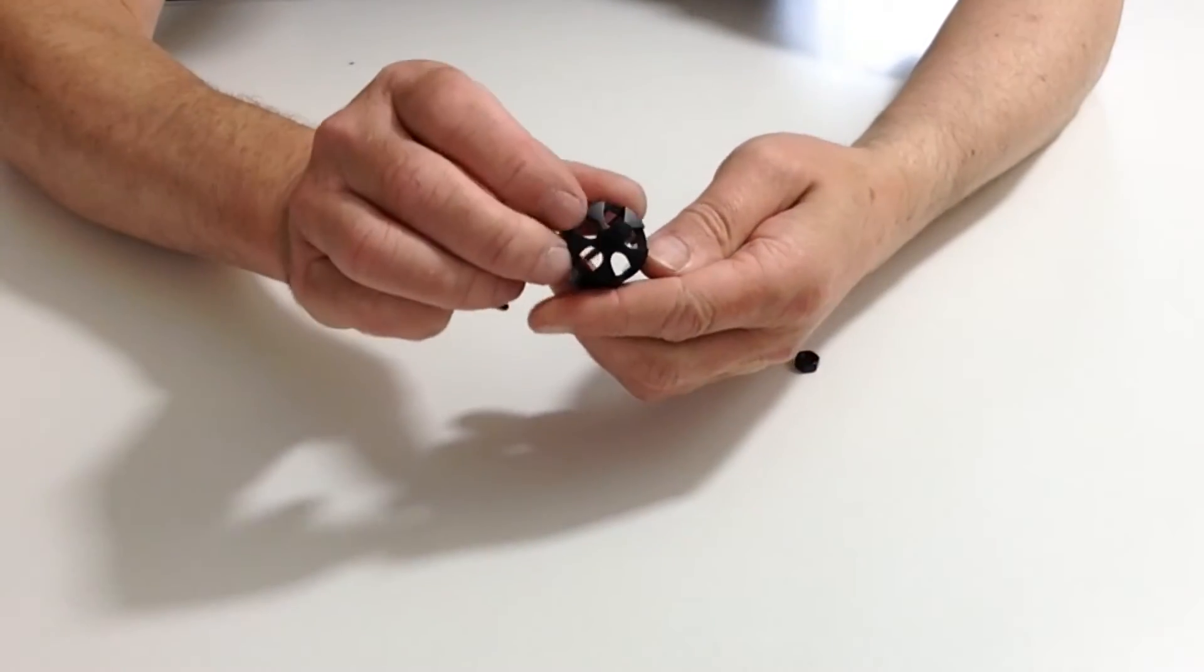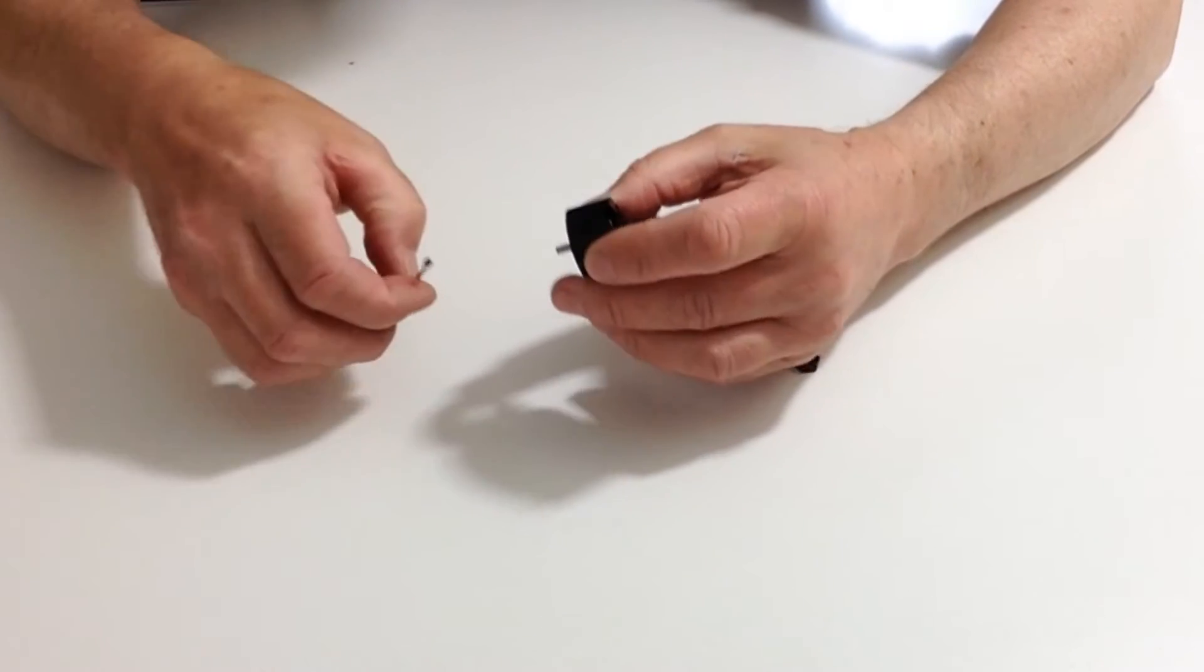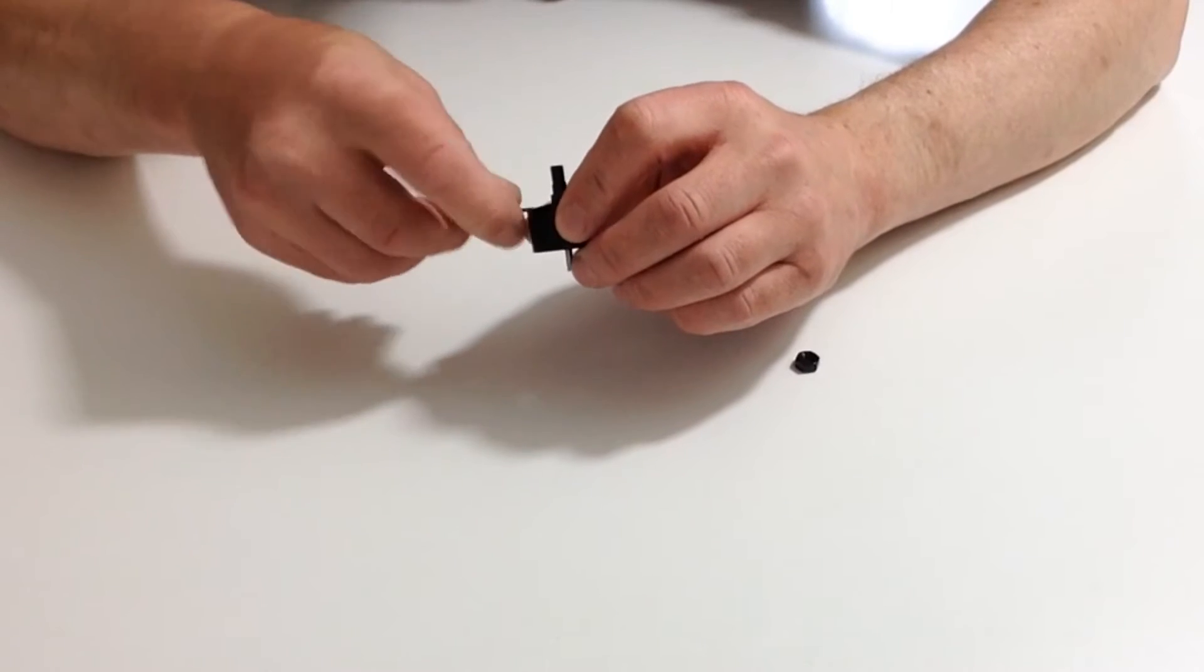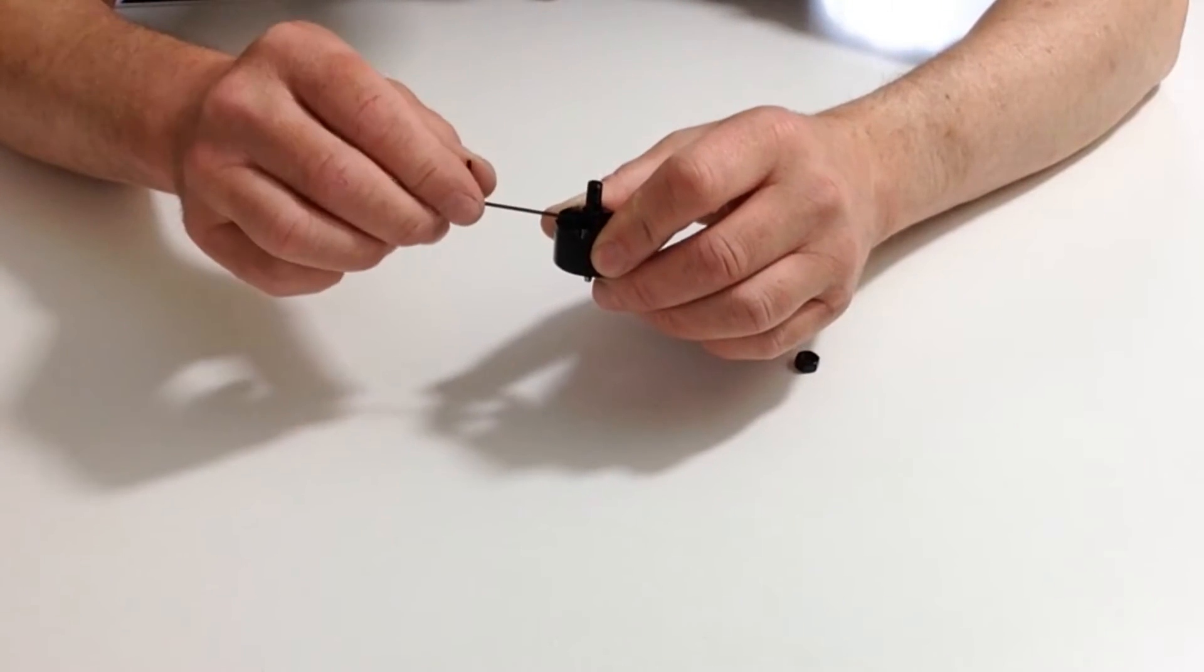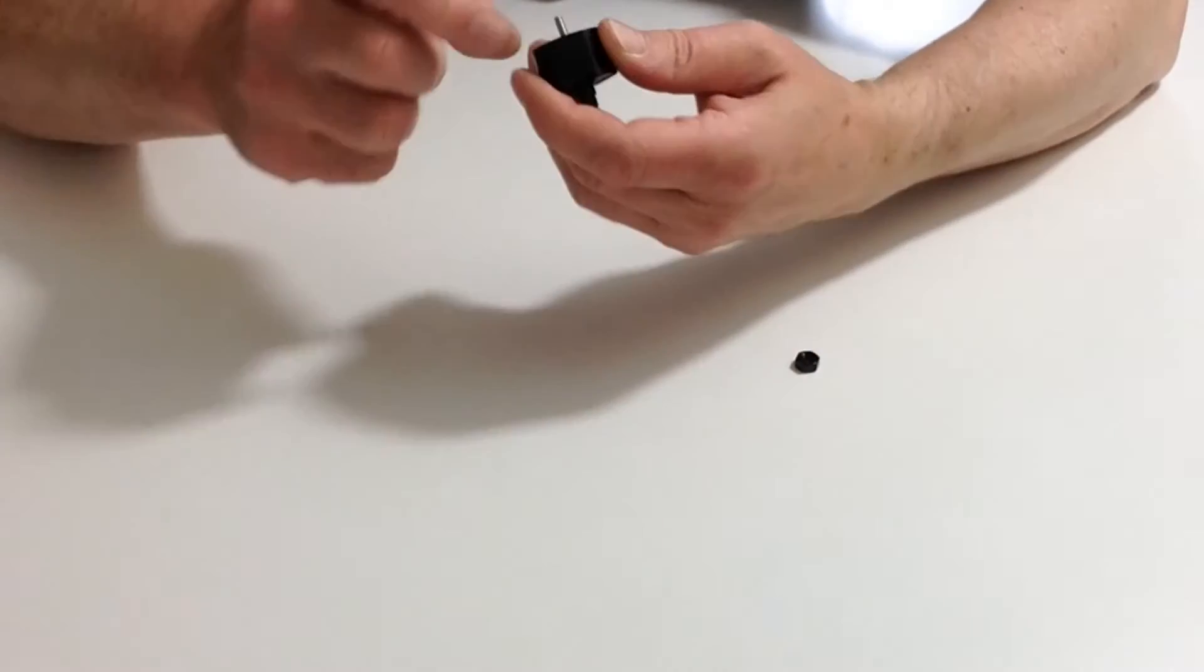So just double check, get your grub screw and then place that in the side like so. Just nip it up but do not over tighten it.